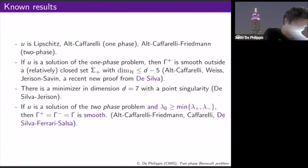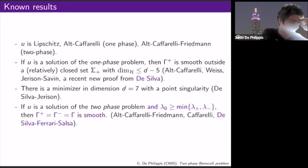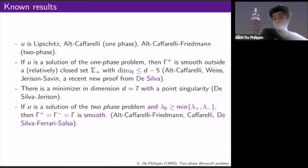What was known? First, to understand the free boundary you need to understand the optimal regularity of your function. The optimal regularity turns out to be Lipschitz regularity. You can see this from a scaling argument: the Dirichlet energy scales like u^2 times length^{d-2}, and the measure term scales like length^d, so for balance you need u to have units of length — giving Lipschitz regularity.